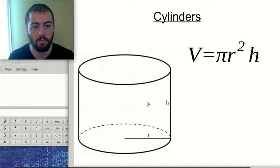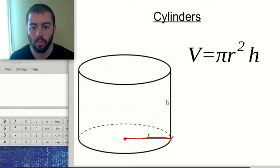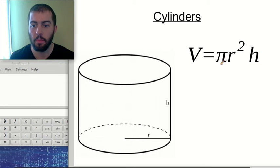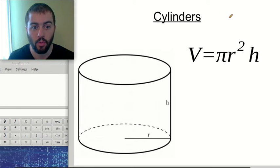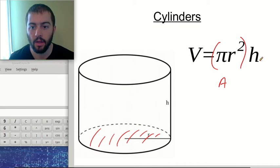The next shape we have is cylinders, just like a soup can. What you're going to need for finding the volume of a cylinder is the radius, which goes from the center of the circular base out to the edge of the circle, and then the height, which goes from one circular base to the other along the edge. The formula for cylinders is pi r squared h. This is a similar concept to the rectangular prism: pi r squared is the area of a circle, and then we multiply by the height — base area times height.